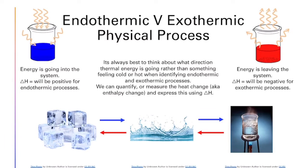First, let's talk about endothermic versus exothermic physical processes, and then we're going to talk about the chemical processes. Traditionally, maybe from experiments you've done before, you tend to say that endothermic is cold and exothermic is hot. But that's not always the case. When we're trying to determine whether something is endothermic or exothermic, it's better to think about what the thermal energy is doing — what direction is it going? Is it going into the system or is it leaving the system?